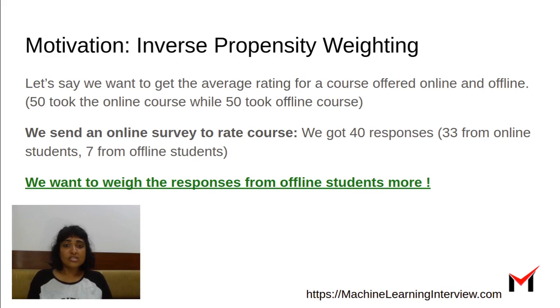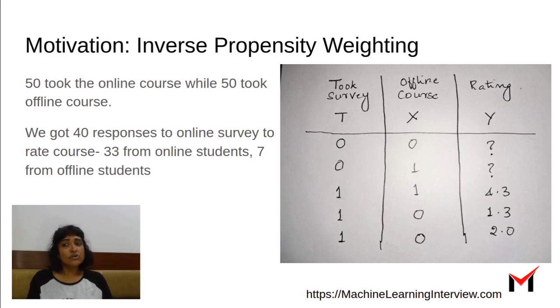We want to weigh the responses from the offline students a bit more. So how do we do this? Think of your data set as a table here where the first column is whether they took the survey or not. So 40 people took the survey. So you should have 40 ones and the remaining zeros. And then their course, whether it's offline or online, how the student has taken the course, you should have 50 zeros and 50 ones here and the rating they gave to the course.